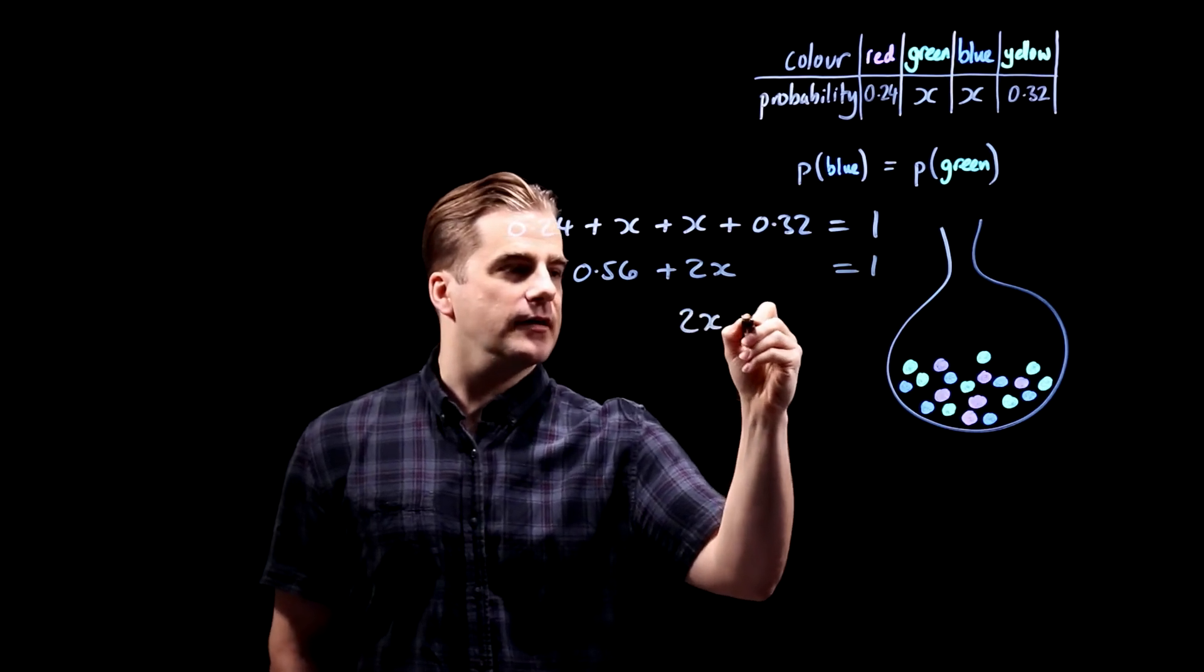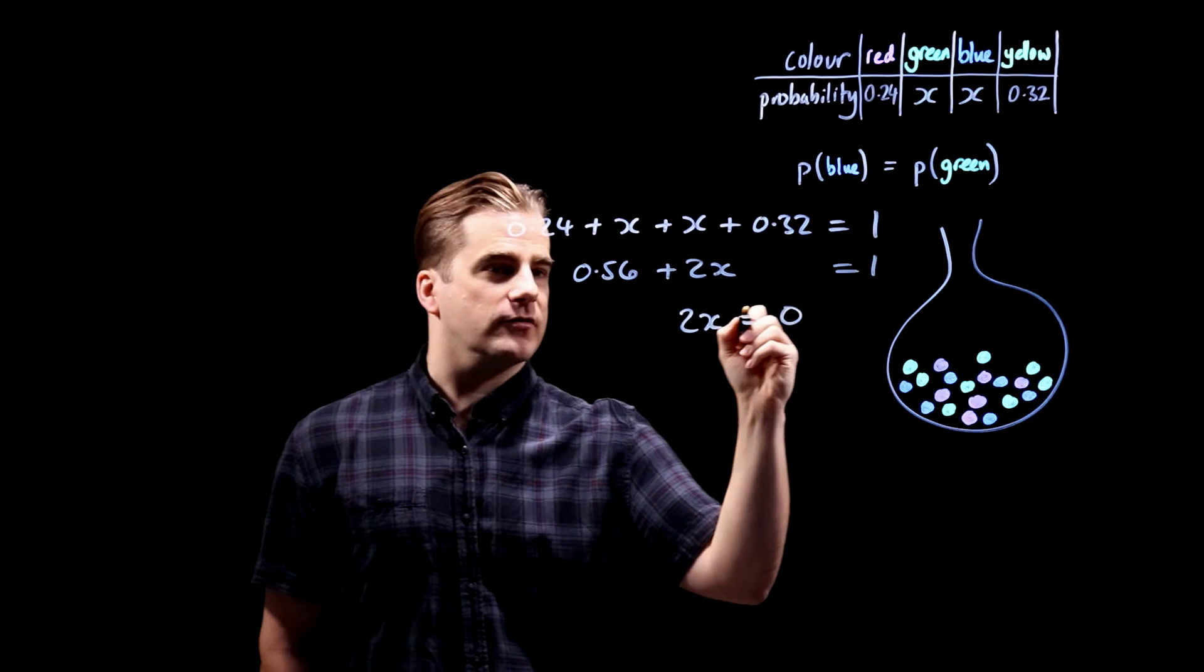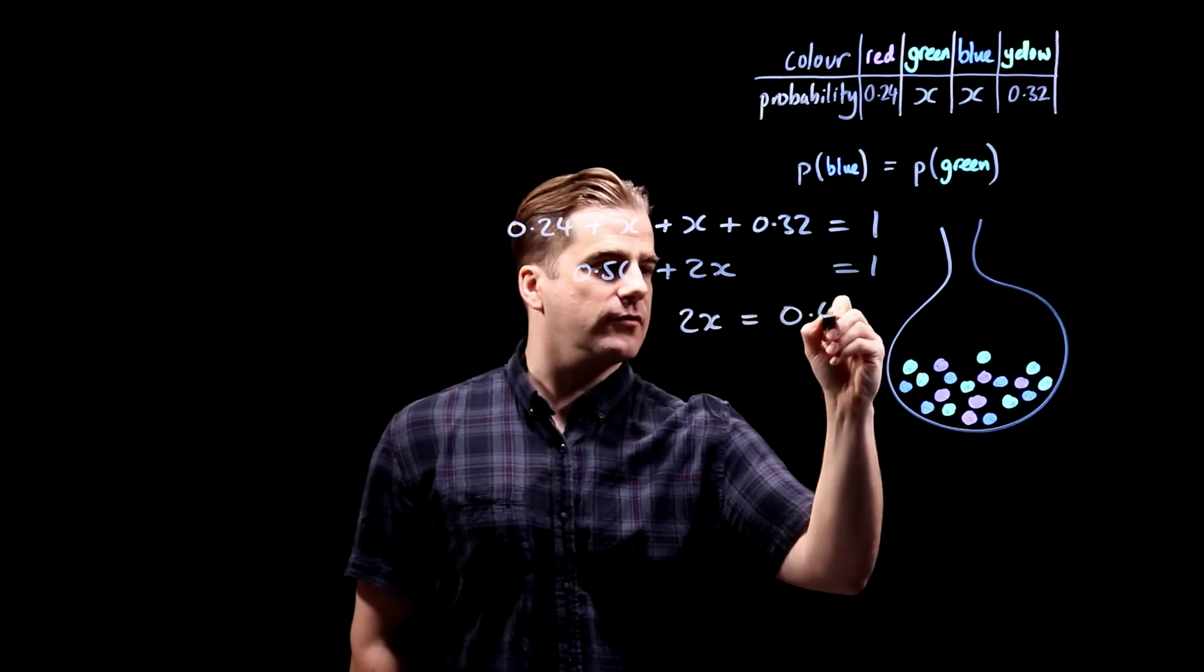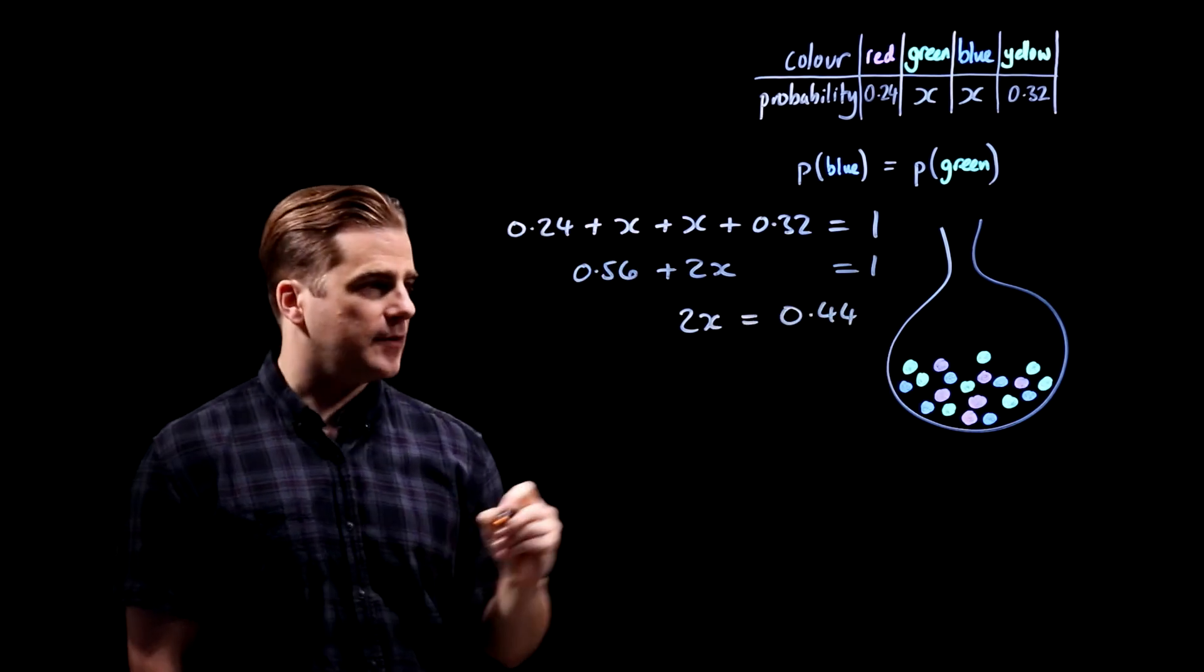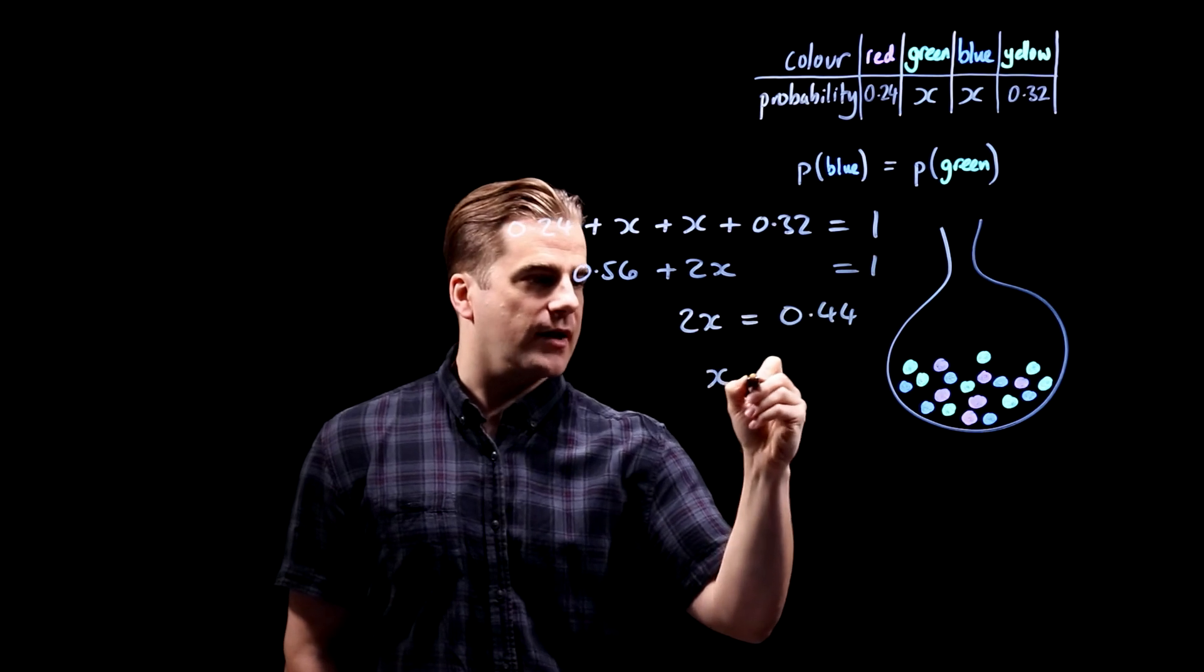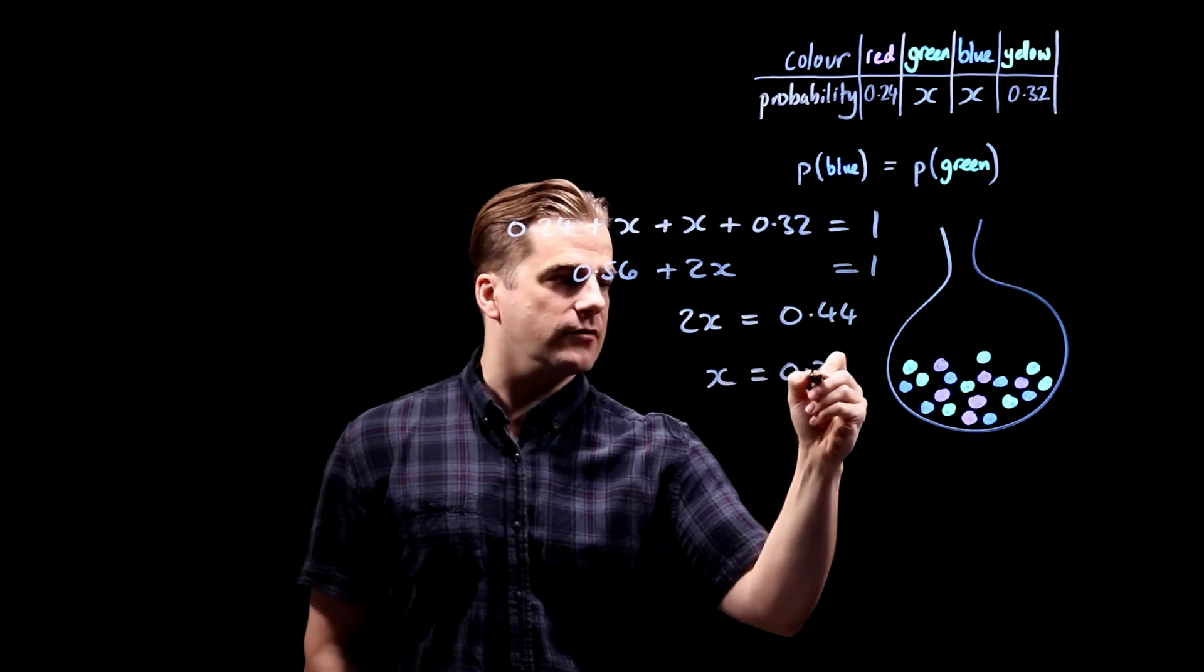1 minus 0.56 is 0.44. Divide both sides by 2 and we get x is 0.22.